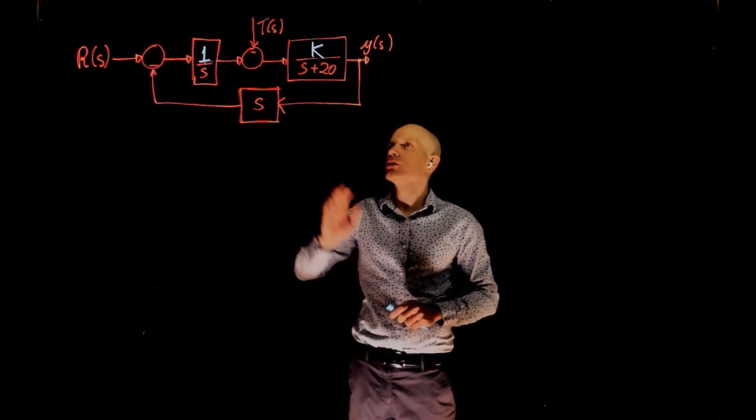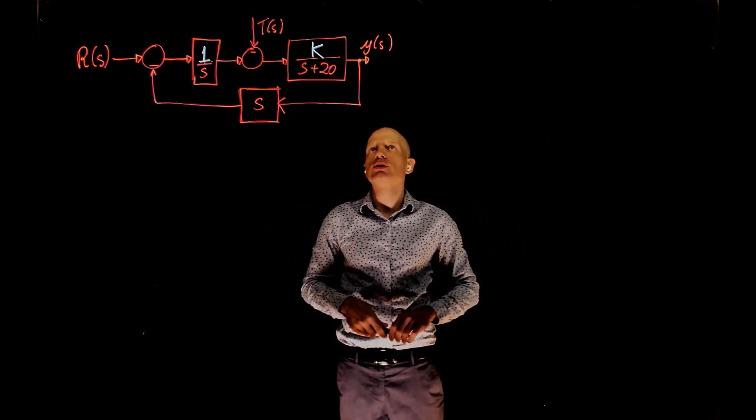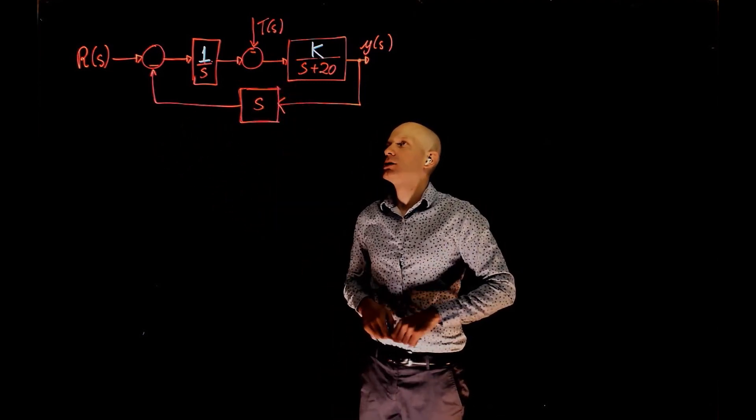To find the time constant of the closed loop system, we need the closed loop transfer function, that is y over r, when T is zero.